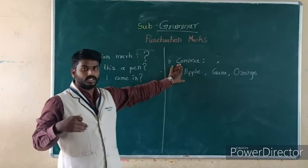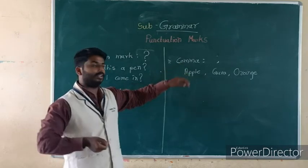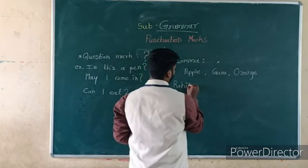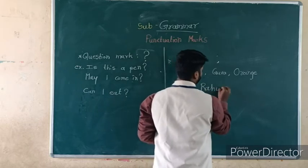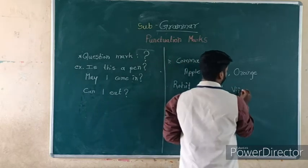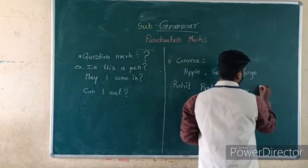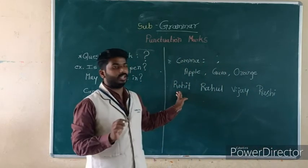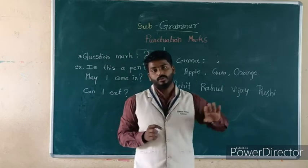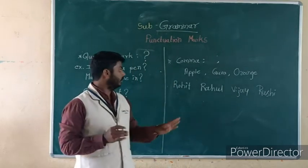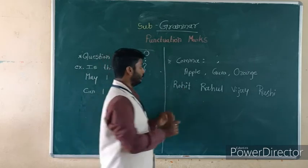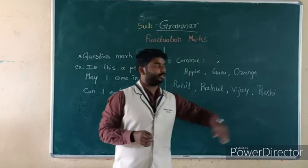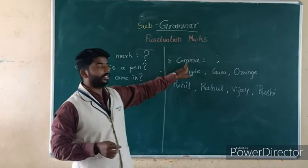Like this, you can use some more examples. Suppose students' names are there — Rohit, Rahul, Vijay, and Rushi. We can write these names in one line using commas: Rohit, Rahul, Vijay, and Rushi. So like this we have to use this comma. The next mark is exclamation mark.